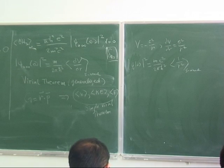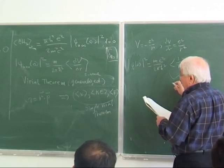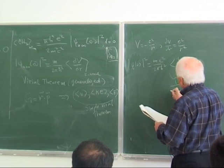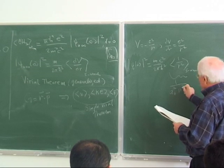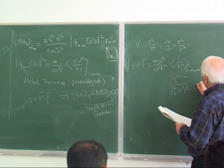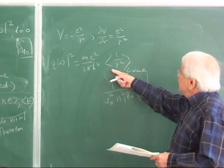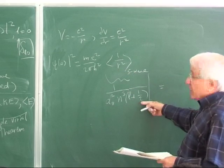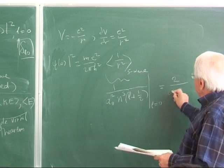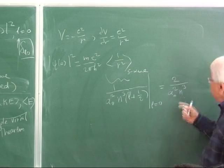From the standard tables, the expectation value of 1/r² in hydrogen is 1/(a0² n³ (L + 1/2)). For L = 0 (S-waves), this becomes 2/(a0² n³) — the L + 1/2 factor becomes 1/2. Therefore |psi_N000|² = (m*e² / 2*pi*h-bar²) times (2 / a0² n³), which simplifies to m*e² / (pi*h-bar²*a0²*n³).